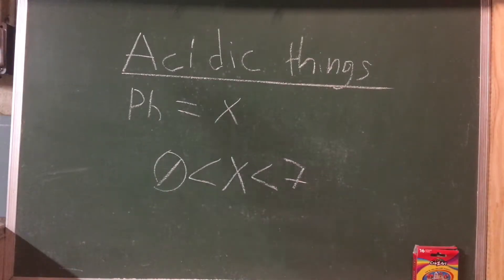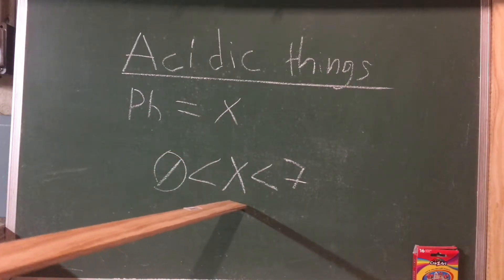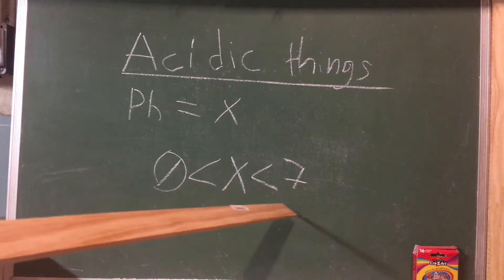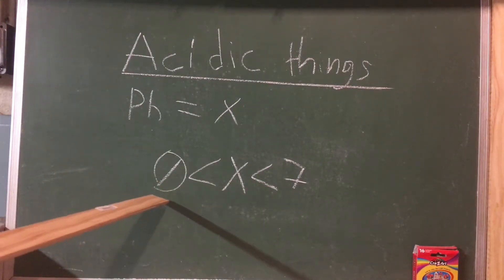You can express acidic things for their pH in inequality equations. So let's say pH equals x for acidic things. Acidic things must have a number less than seven but larger than zero.